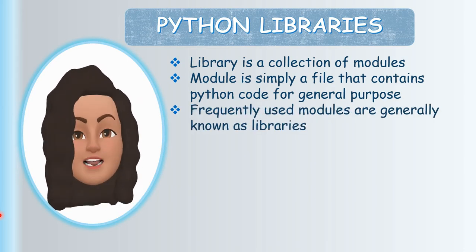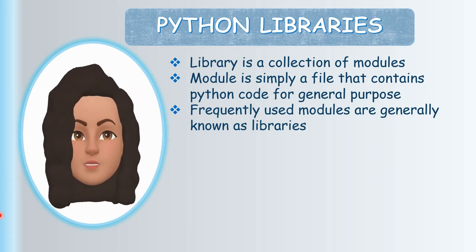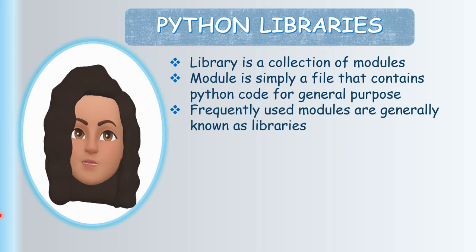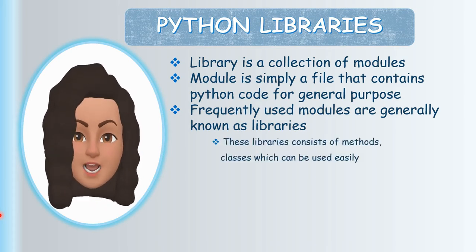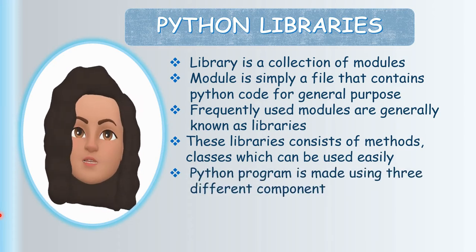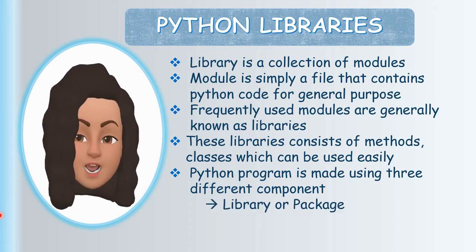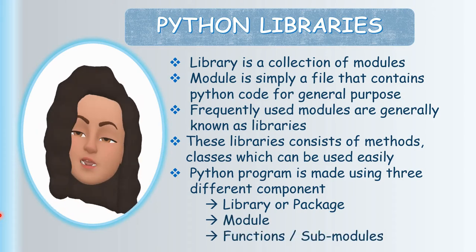Libraries contain methods and classes which can be used easily. A Python program is made using three different components: library or package, module, and functions or sub-modules. So a Python program contains three different components: first the library or package, then the module, then functions or sub-modules.